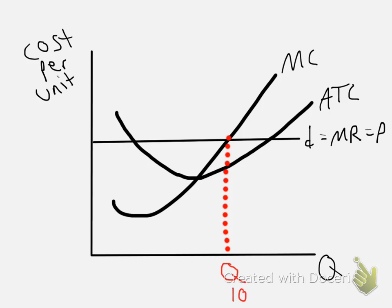Next, at that quantity, we want to find the price that is being charged. Well, it turns out that the price, we go over here to the price axis, it's just the market price. And let's say for the sake of argument that that's $7 per unit.